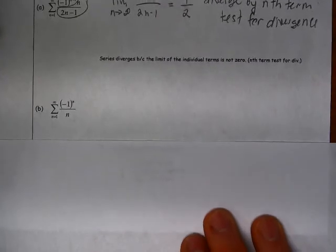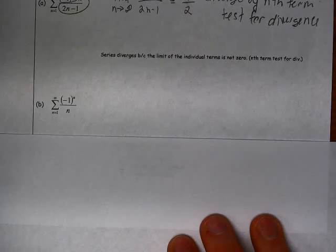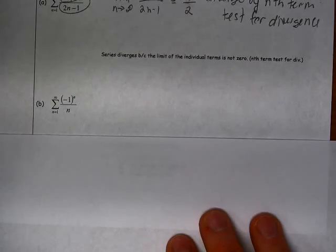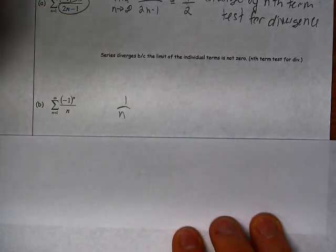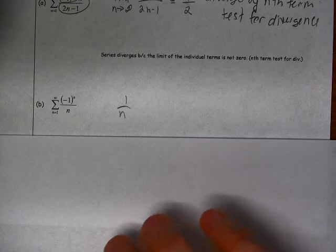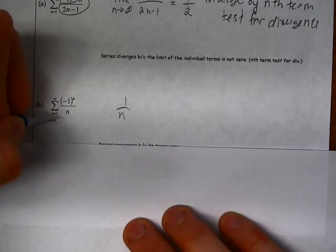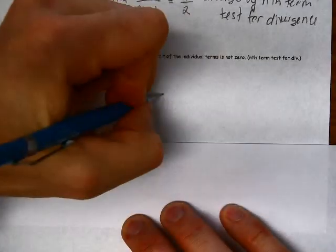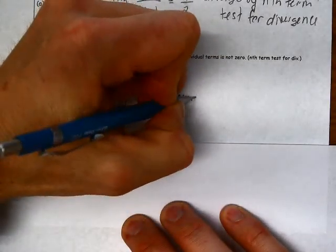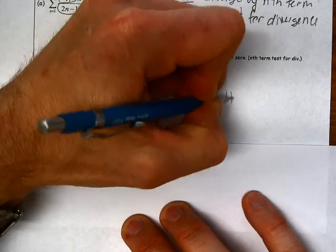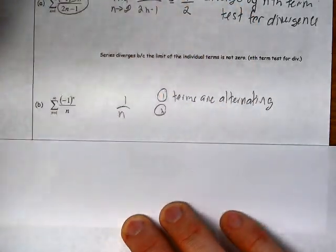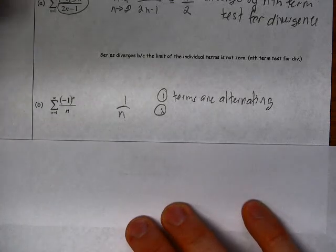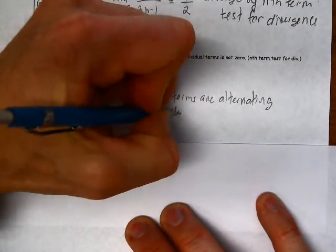Look at our next example. If we think about the part of this that's not alternating, it's just 1 over n. So for this series, the terms are alternating, so we meet that condition. They are decreasing in magnitude as n increases. These terms are decreasing in magnitude.